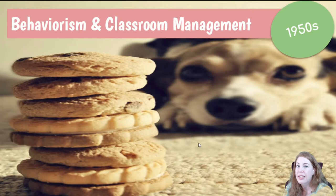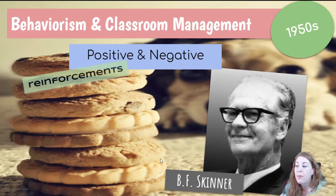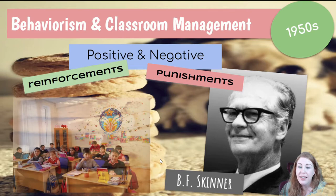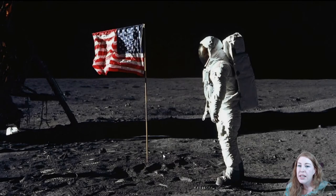We have to talk about behaviorism and classroom management in the 1950s. Behaviorism was a psychological understanding happening in the realm of psychology, and a lot of people were building theories and experiments around these ideas. The main figure doing this was B.F. Skinner, and he came up with both positive and negative reinforcements for good behavior and punishments for bad behavior. This led to a lot of changes in how classrooms and schools were run, specifically how behavior was managed in students.